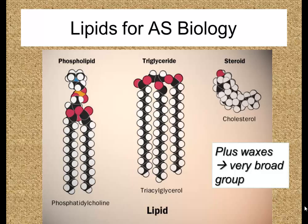I haven't got an image of waxes here because they're just a really very broad group. However, all phospholipids look approximately like this one on the left, or triglyceride like the one in the middle, and all steroids, or sometimes called sterols, like the one on the top right. In this video, we're going to look carefully at the structure of triglycerides and phospholipids, a little less carefully at the structure of steroids, and we are going to entirely ignore the structure of waxes.